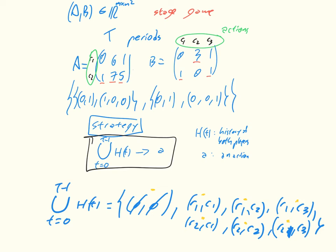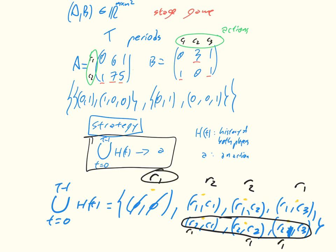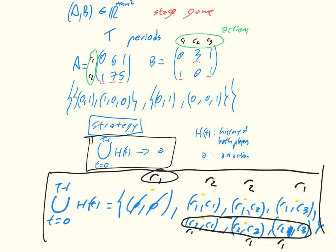For example, the row player's strategy might be: the first time we play, play r1; then, given the column player played c1 or c2, play r2, but if they played c3, play r1. A strategy in a repeated game is simply a mapping from the entire possible history of play so far to an action. You'd write this strategy down on a card, and the column player would do the same with c's — and then you can determine exactly what each player would do.